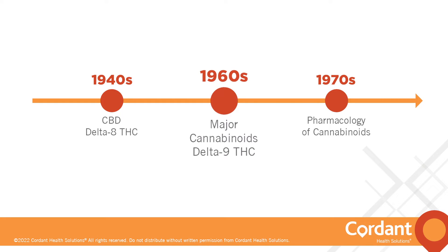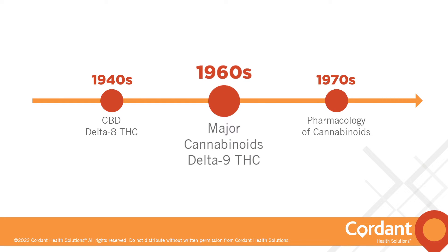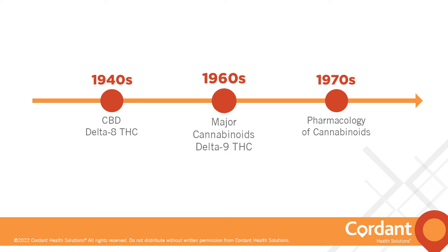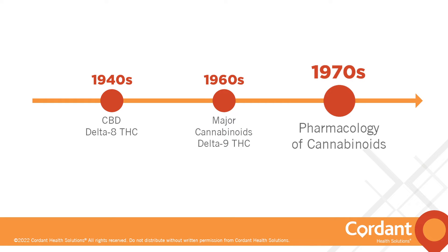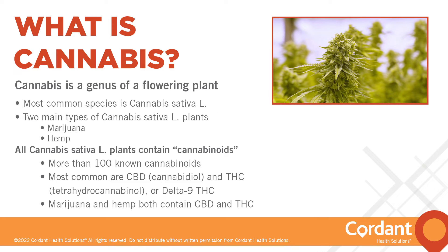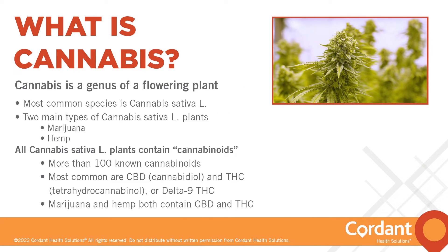It really wasn't until the 1960s that the major cannabinoids were structurally identified. Around that time period of the 60s and early 70s, research into the pharmacology of cannabinoids increased markedly, mainly in response to the widespread recreational use of cannabis in the UK and other western countries.